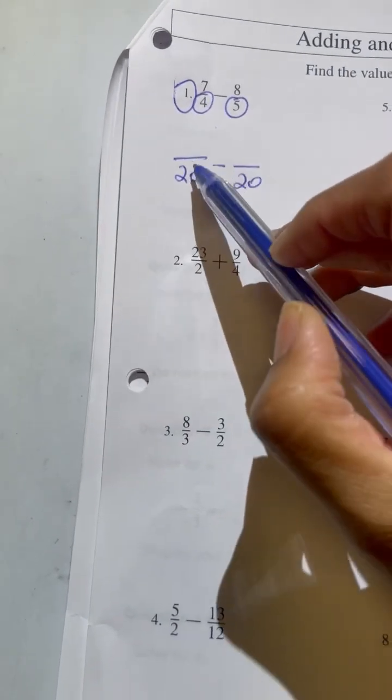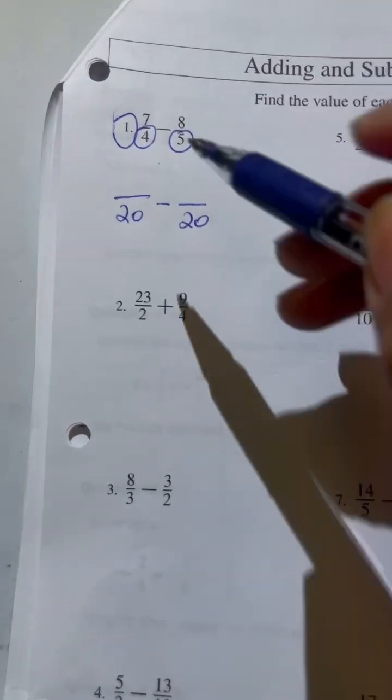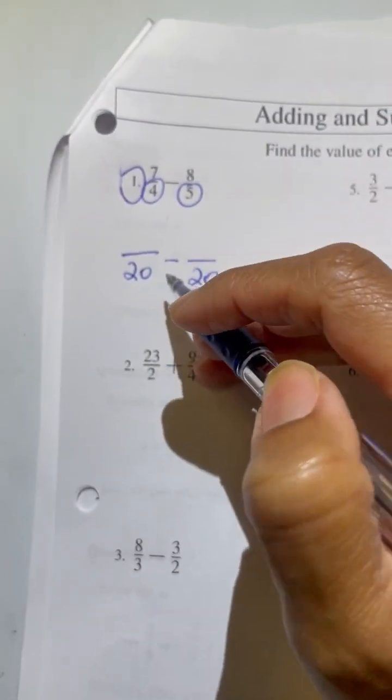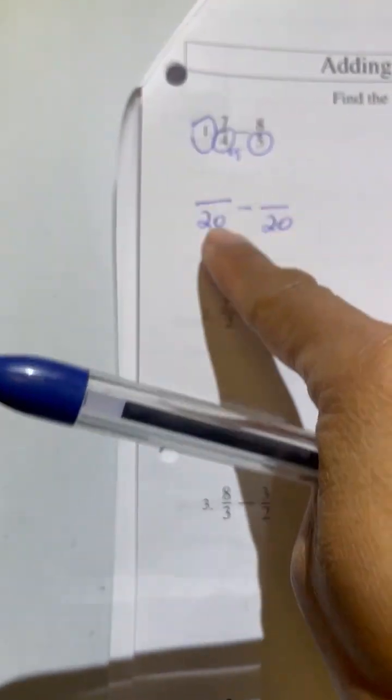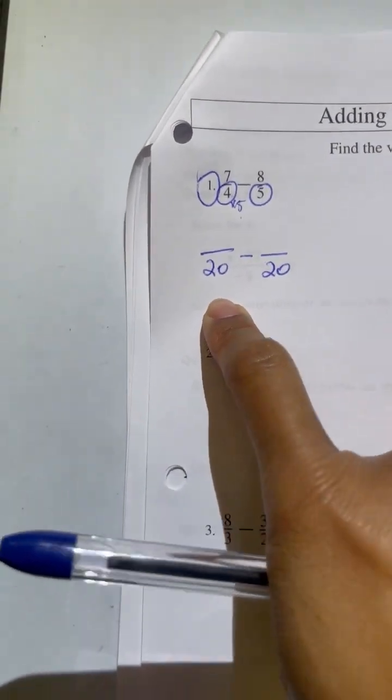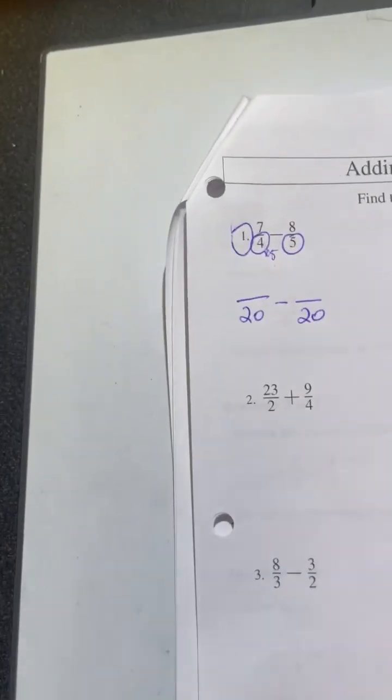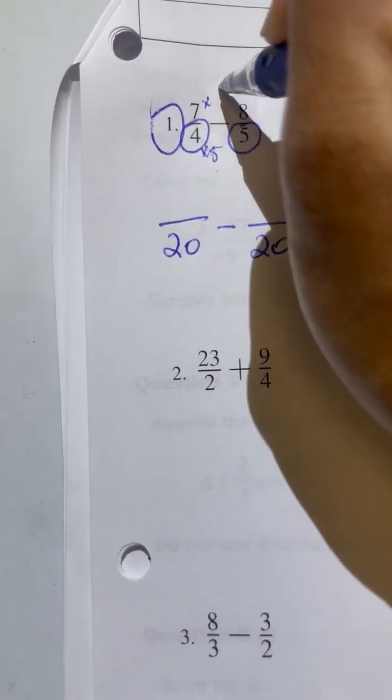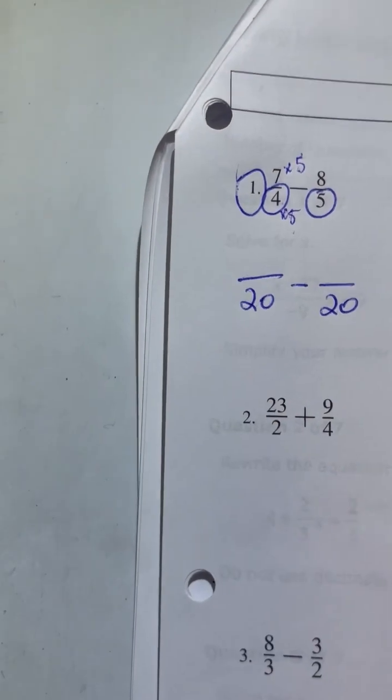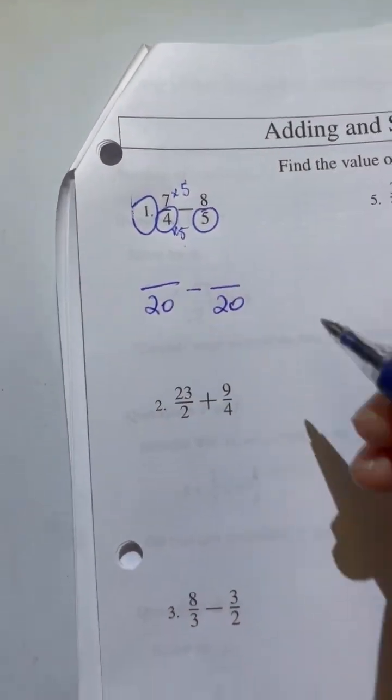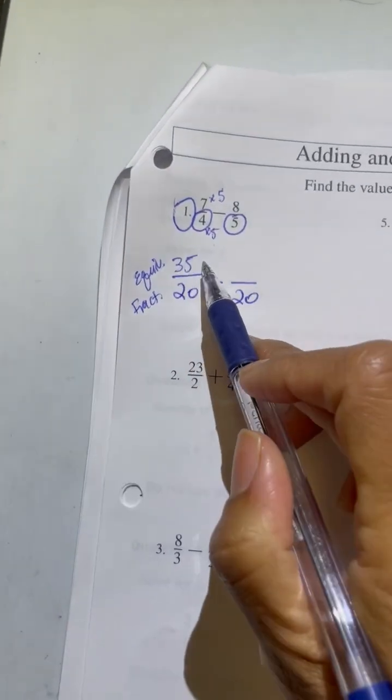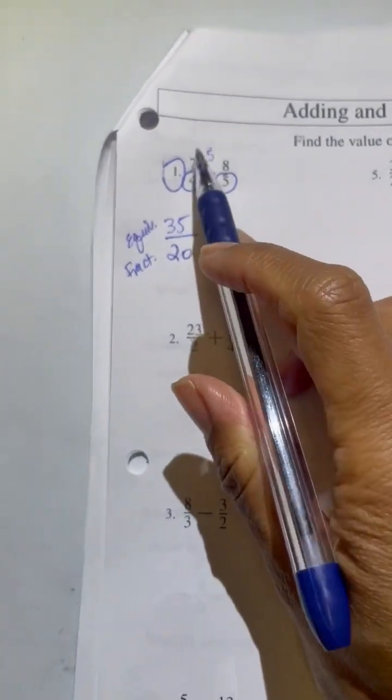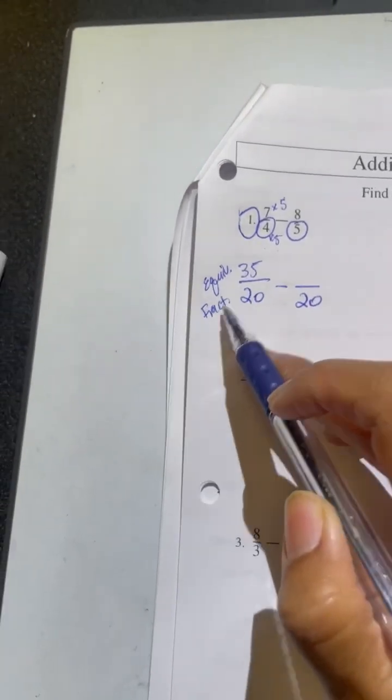So to go from 4 to 20, I asked myself, what did I have to do to go from 4 to 20? I needed to multiply by 5. I needed to multiply by 5, 4 times 5 to get to 20. Whatever you do, the bottom fraction you must do to the top. So therefore, the top I also need to multiply by 5. So therefore, 7 times 5 is 35. This is what we call equivalent fractions.